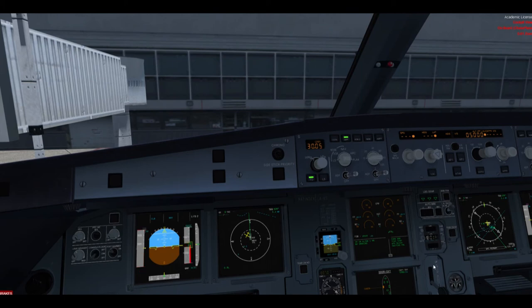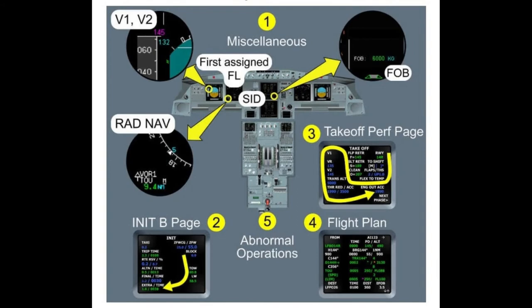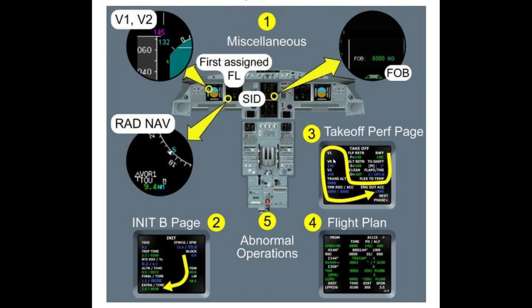For the takeoff briefing, the FCTM Flight Crew Techniques Manual has this available as a guide. Some airlines print this and pilots will pull it out and read it. My opinion is, since you're going to be doing this hundreds if not thousands of times, you might as well memorize it. It follows an order, and Airbus makes a point that briefing is brief — concise and relevant. First step: miscellaneous. Then INIT B page, followed by the takeoff performance page starting with the runway, going up to V-speeds, engine-out acceleration, tying into flight plan and abnormal operations.